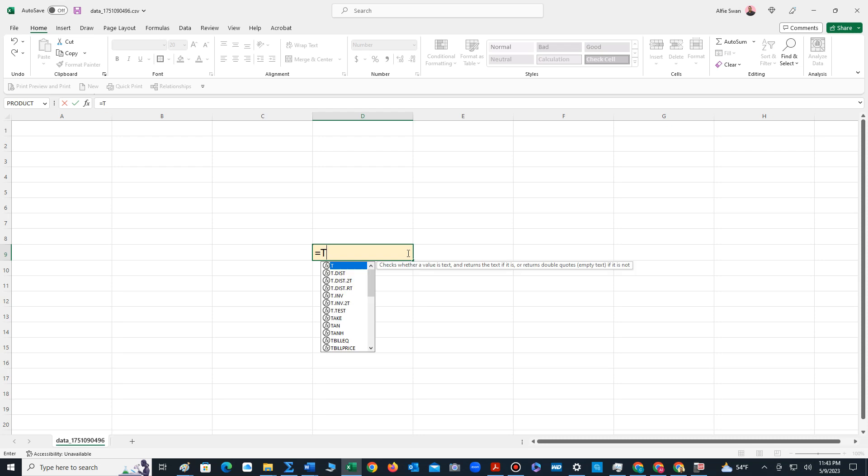Then you type T. As soon as you type T, a bunch of options become available. And the option we're looking for is T dot inverse dot two tails. So we click on that option.